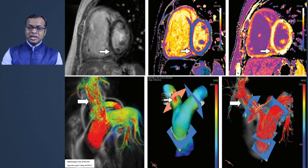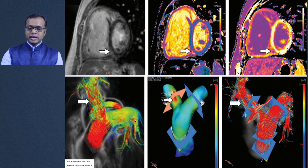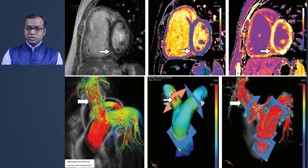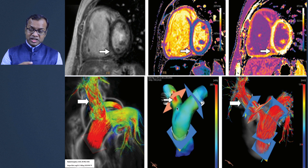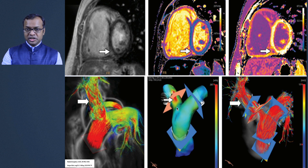Other useful MRI parameters include delayed enhancement imaging to detect fibrosis and mapping sequences. A newer technique — 4D flow MRI — is well adopted in the Western world and increasingly in India, allowing assessment of flow across each vessel, pressures, and strain to help calculate pulmonary arterial pressures.